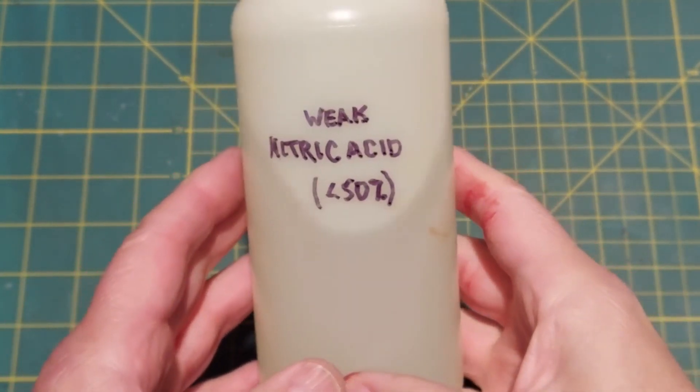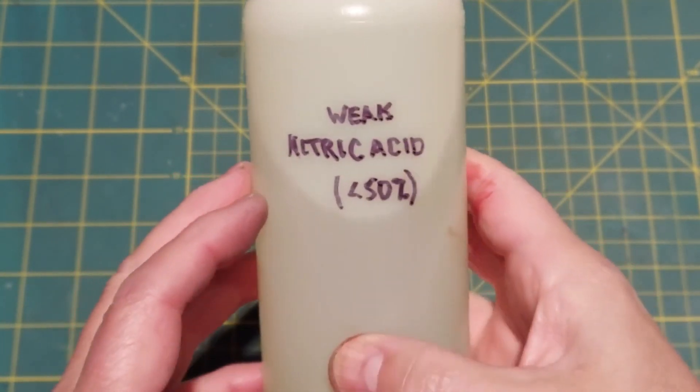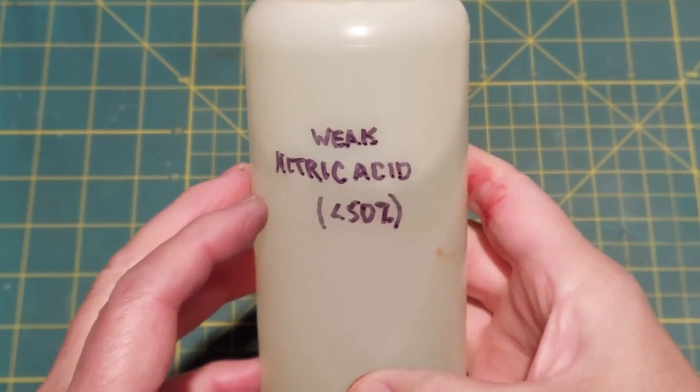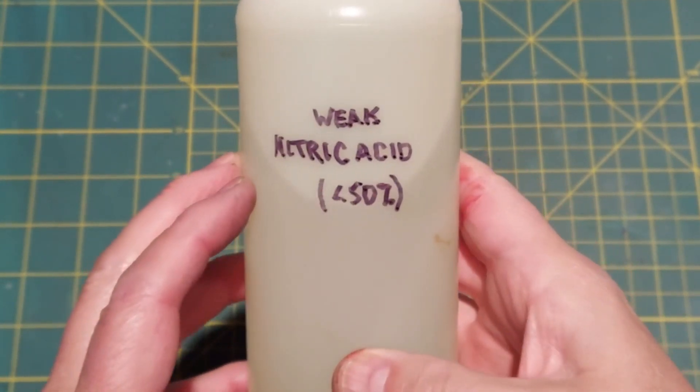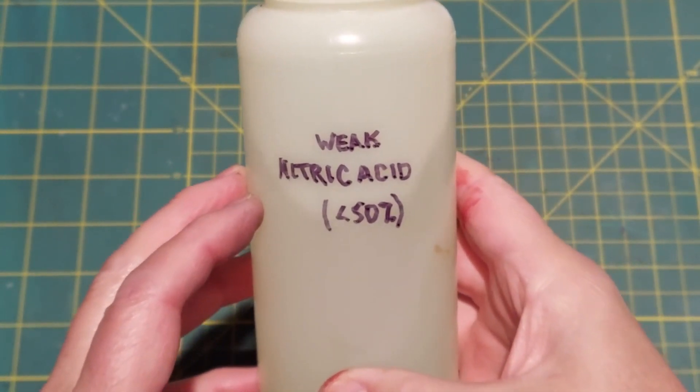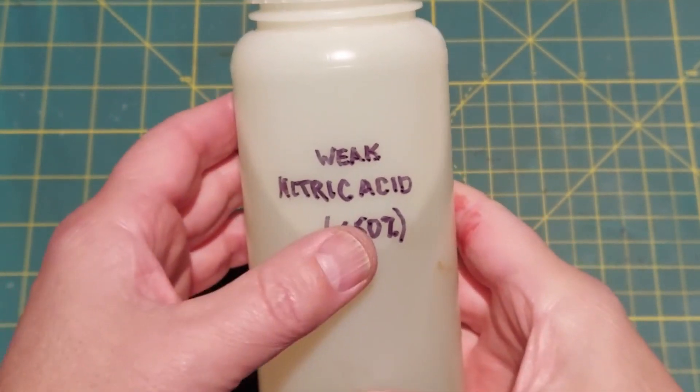This is a bottle of weak nitric acid that I've collected over the years. I'm guessing the collective percentage is less than 50%. However, there is a way to concentrate this if you need a stronger concentration, and let's look at how we do that.